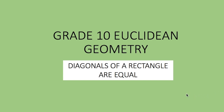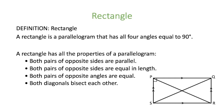We're going to look at grade 10 geometry, specifically a theorem that states that the diagonals of a rectangle are equal. The first thing we'll do is look at the definition of a rectangle: a rectangle is a parallelogram that has all four angles equal. In this drawing, this is a parallelogram where opposite sides are parallel. The difference between a parallelogram and a rectangle is that the angles are 90 degrees. A rectangle is an example of a parallelogram.